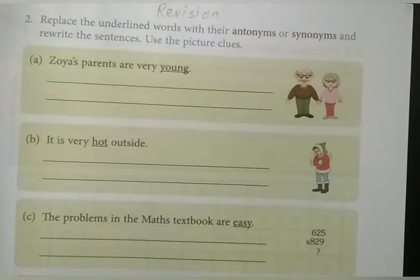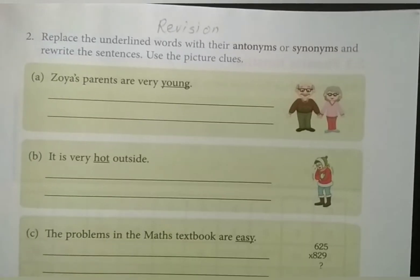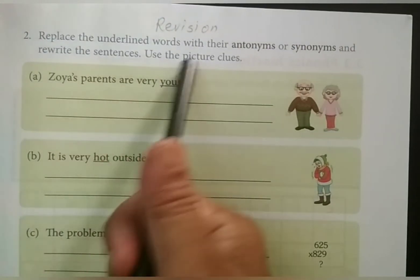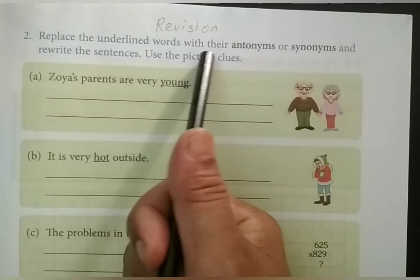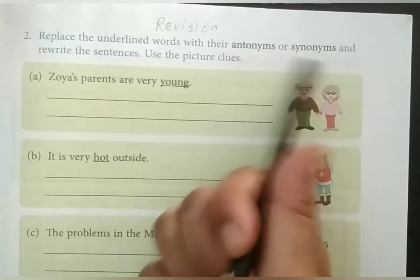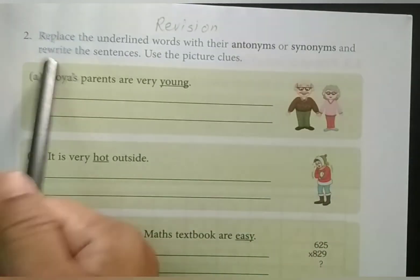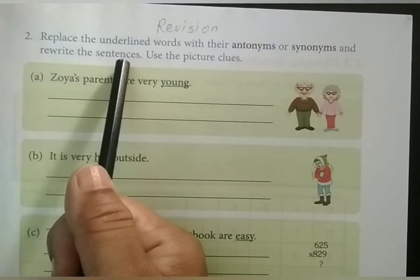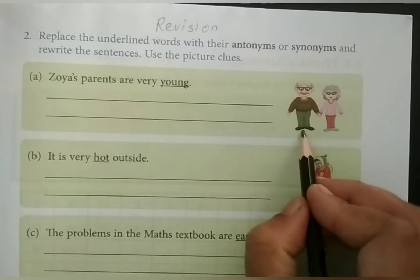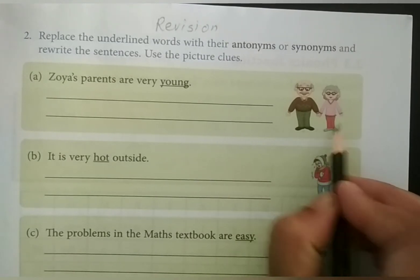Now turn the page. This is your page number 15. And here, replace the underlined words with antonyms or synonyms and rewrite the sentences. Use the picture clues.